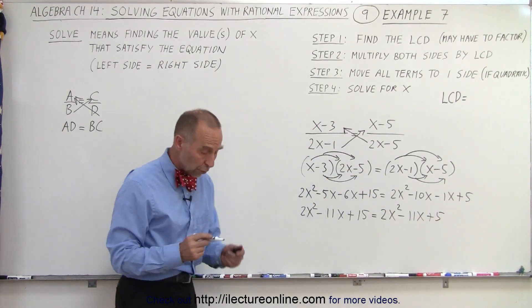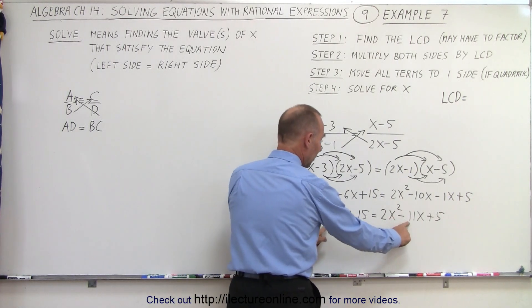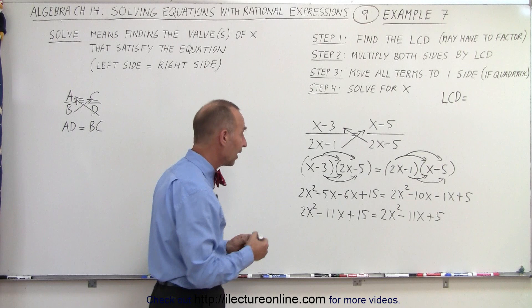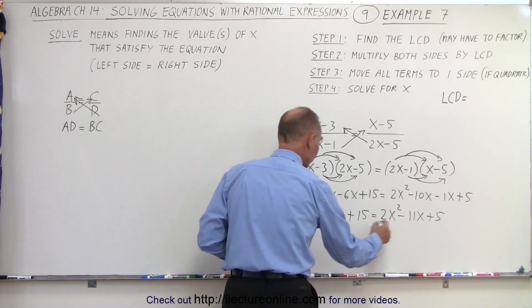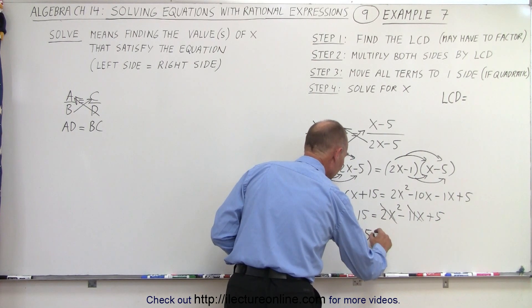Now here, let's take a look. Notice that on both sides, we have 2x squared, and on both sides, we have minus 11x. So we can subtract those from both sides, which means this cancels out, and we're left with 15 equals 5.